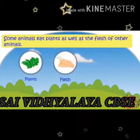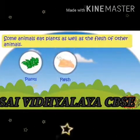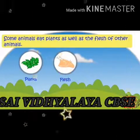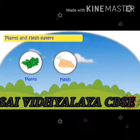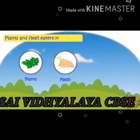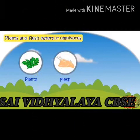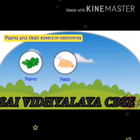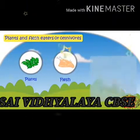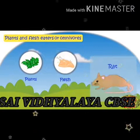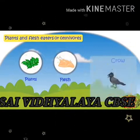Some animals eat plants as well as flesh of other animals. These animals are called plant and flesh-eaters, or also called omnivores. Some examples of omnivores are bears, rats, cats and crows.